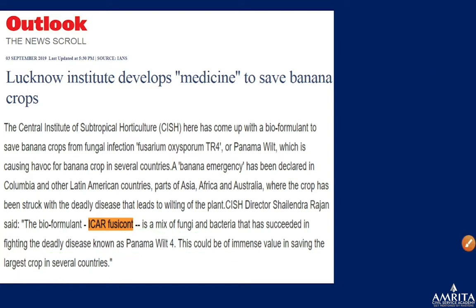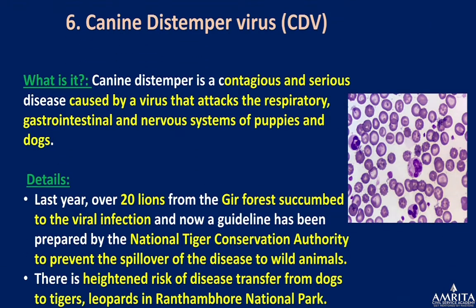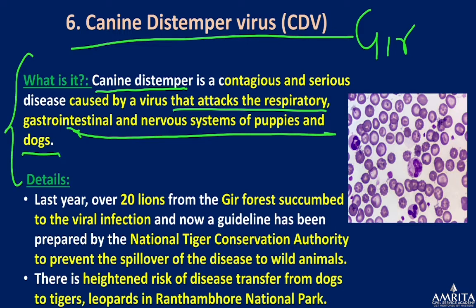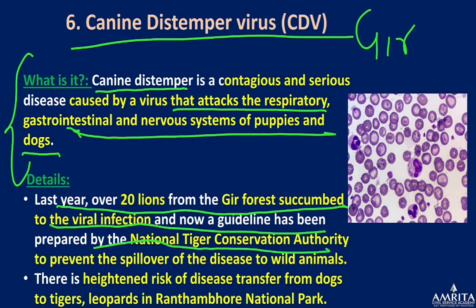Canine Distemper Virus was in the news because it killed many lions in Gir National Park. It is a contagious and serious disease caused by a virus that attacks the respiratory, gastrointestinal, and nervous systems of puppies and dogs. Last year, 20 lions from Gir Forest succumbed to viral infection, and guidelines have been prepared by NTCA — National Tiger Conservation Authority — to prevent spillover to other wild animals.